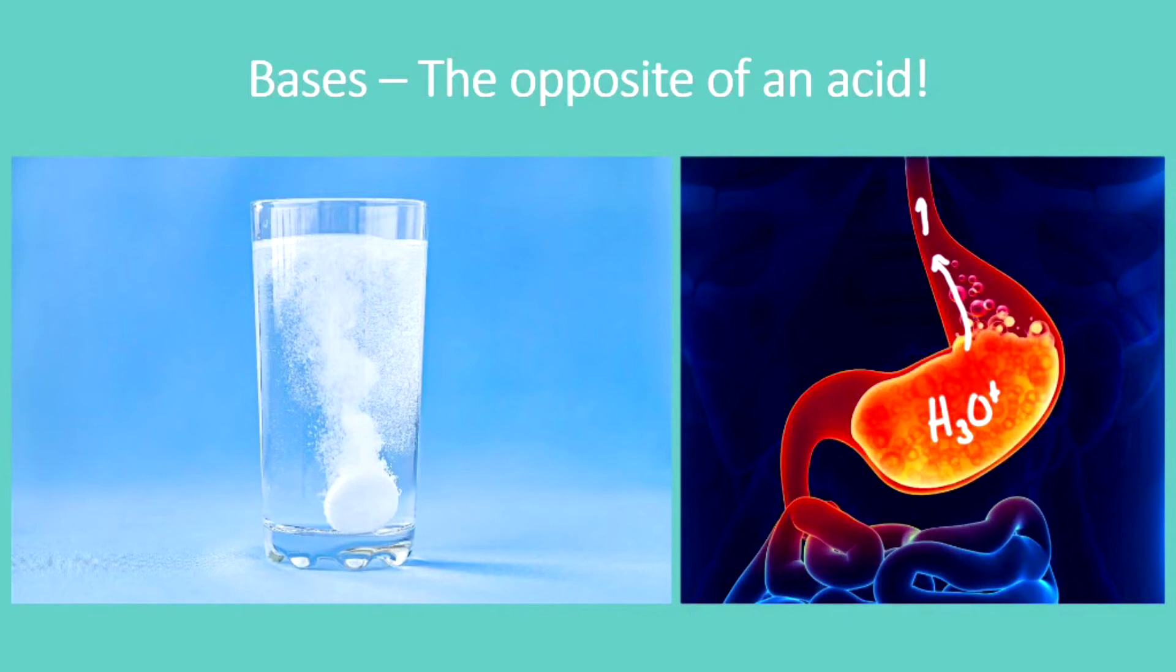The answer to that problem, if you have heartburn, is to take what's called an antacid. And this is an antacid, which is just another way to say that we have a base, the opposite of an acid. And what we'll do with that antacid is we'll take it and we'll combine it with the acid in our esophagus, and it'll neutralize it. Let's take a look at just how that works by understanding better what a base is.